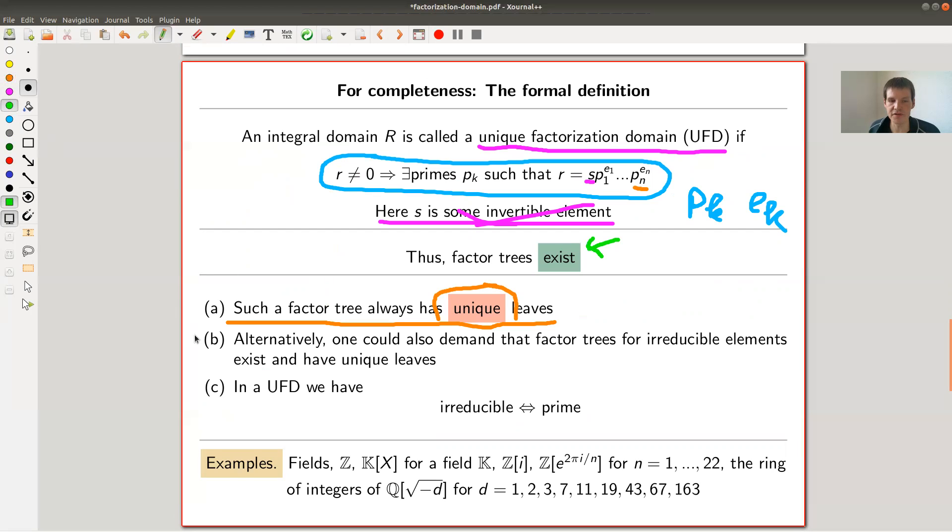What you could do alternatively is you can demand that factor trees for irreducible elements exists and unique. It's a little bit less satisfying because you need to demand two things so existence doesn't completely come for free, as I said there is always this risk of running into an infinite chain. Anyway, you could alternatively demand that exists and for irreducible what is really the main meat is that they are unique.